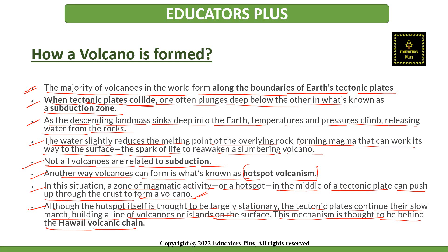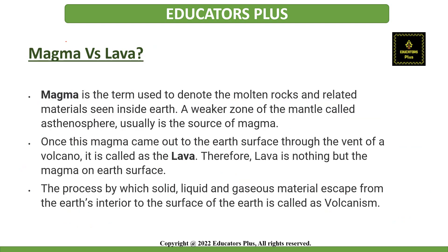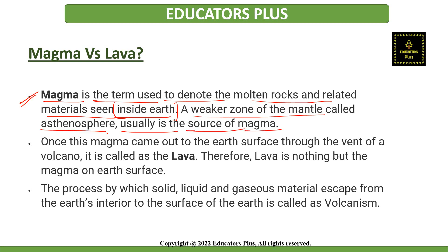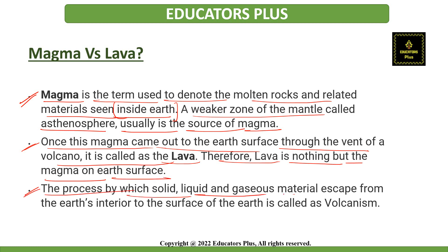There is a slight difference between magma and lava. Magma is the term used to denote the molten rocks inside the Earth. A weaker zone of the mantle called the asthenosphere is usually the source of magma. Once this magma comes out of the Earth's surface through the vent of a volcano, it is called lava. Therefore, lava is nothing but magma on the Earth's surface. The process by which solid, liquid, and gaseous material escape from the Earth's interior to the surface is called volcanism.